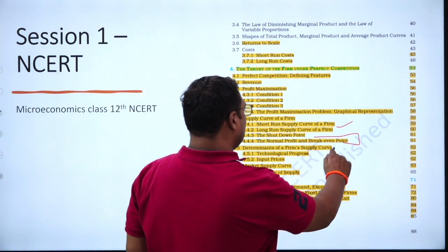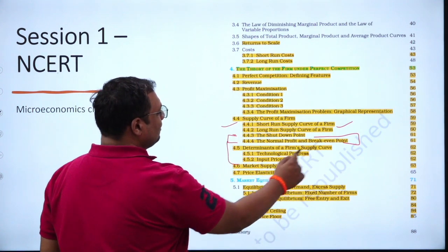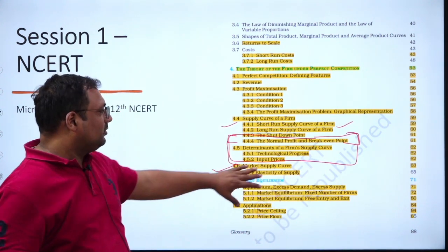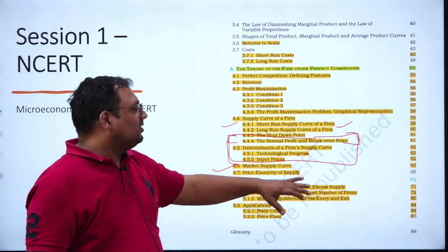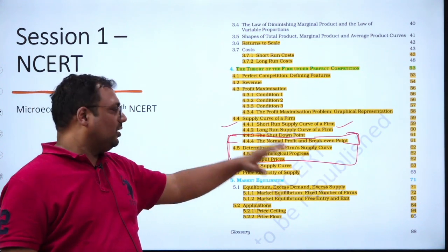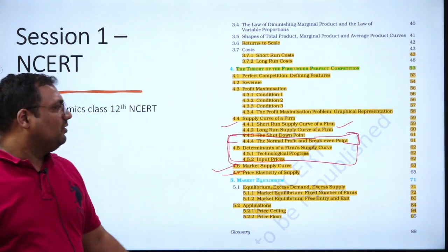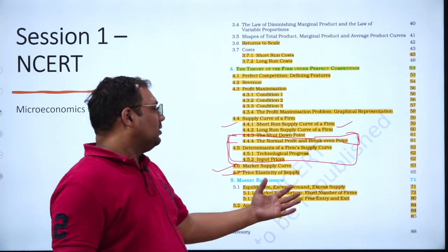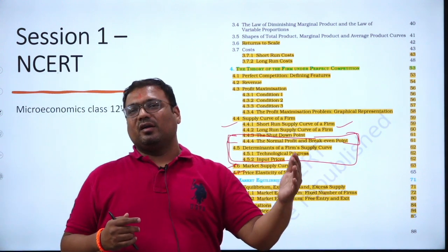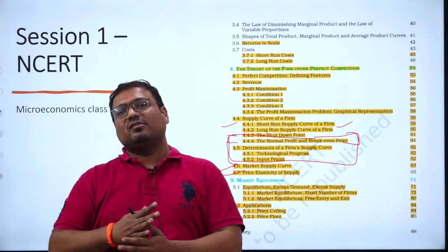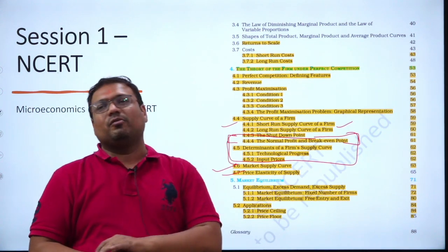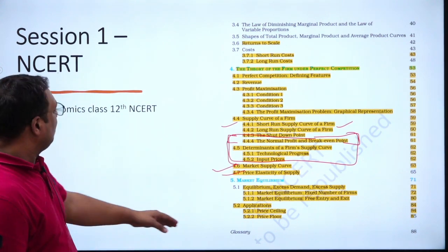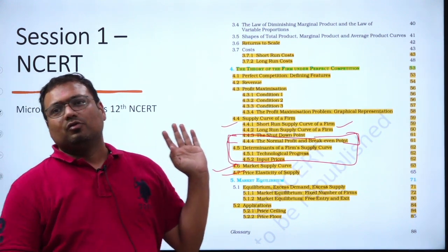Short-run supply curve we can study, but shutdown point, normal profit, and break-even are not asked. Determinants of a firm's supply curve are also not very relevant; what is relevant is the market supply curve. Price elasticity of supply — we cover this very selectively, not entirely. Then we come to market equilibrium: when demand exceeds supply what will happen, when supply exceeds demand what will happen, the impact of each, and under what conditions there will be market failure — all of that we have to cover.